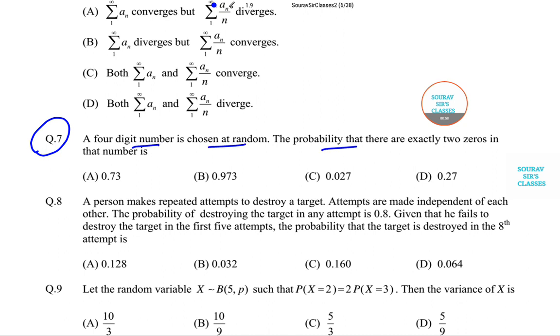The question is: a four-digit number is chosen at random. The probability that there are exactly two zeros in the number is. So let us find it.